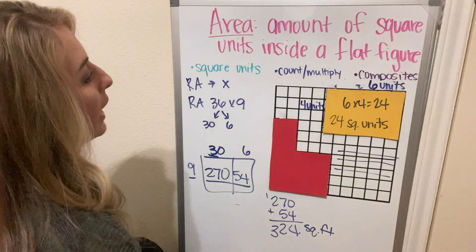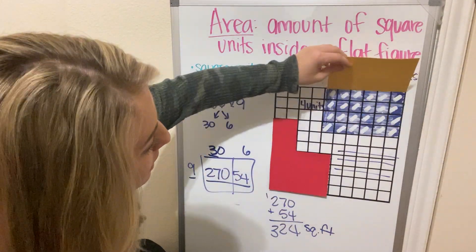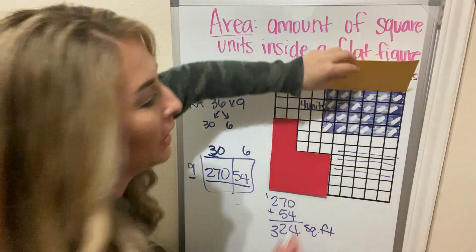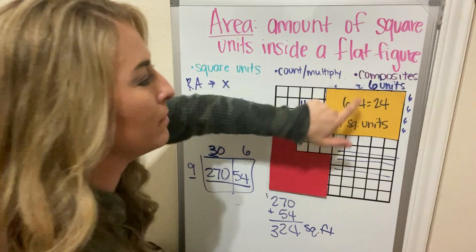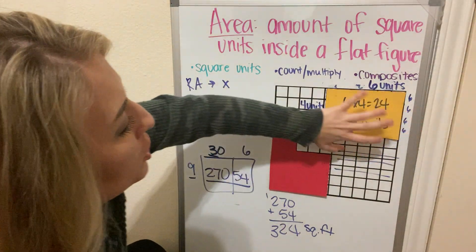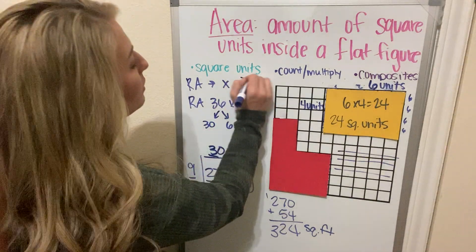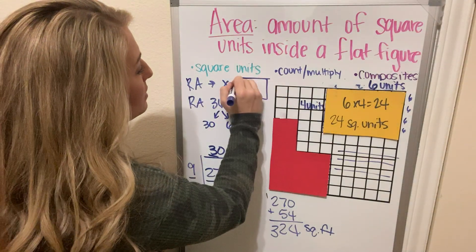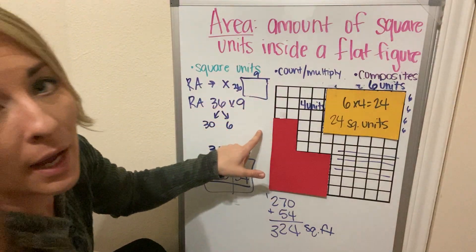So area, simply starting out, is going to look like this where you're counting the squares. Remember, that's just an array — 6 four times is 24. When it gets harder and you don't have a picture, if you can just draw that gym floor and know it's 36 and 9, you can multiply it.